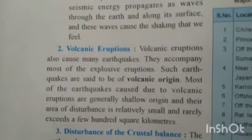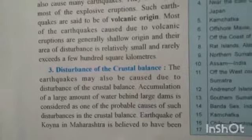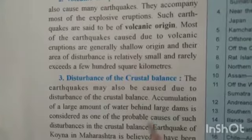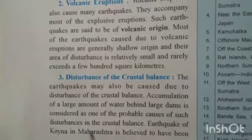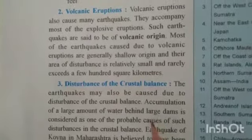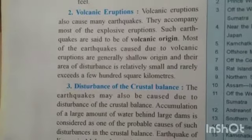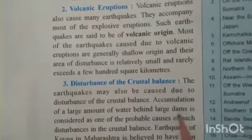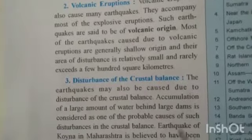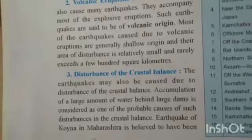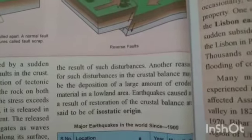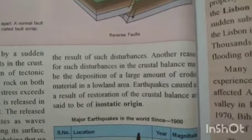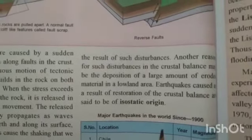Earthquakes may also be caused by disturbance of the crustal balance. Accumulation of large amounts of water behind large dams is considered one of the probable causes of such disturbances. The earthquake of Koina in Maharashtra is believed to have been the result of such disturbances. Another reason may be deposition of large amounts of eroded material in low-land areas; earthquakes from restoration of crustal balance are said to be of isostatic origin.